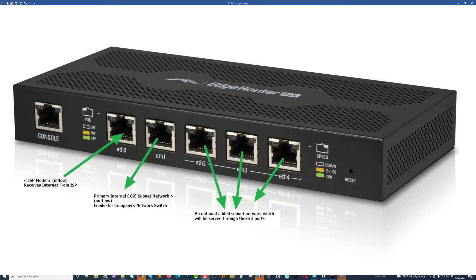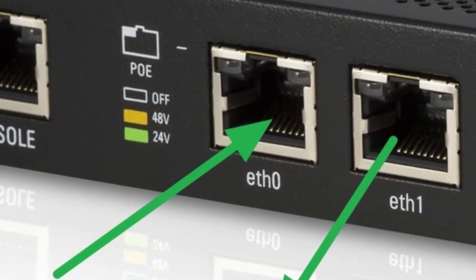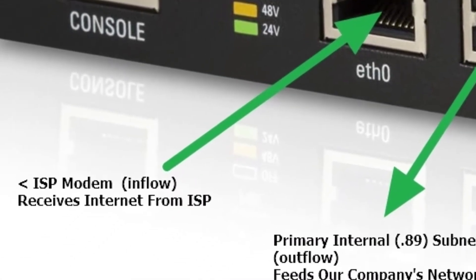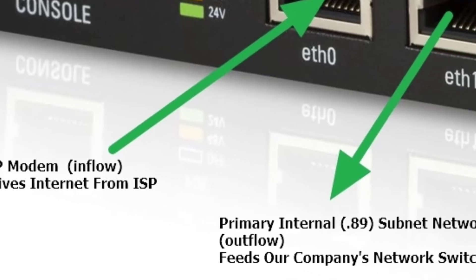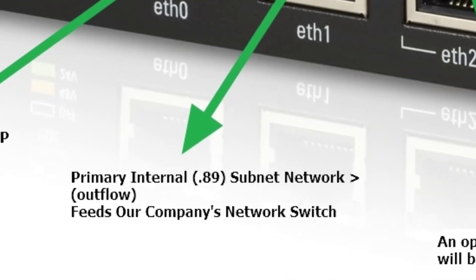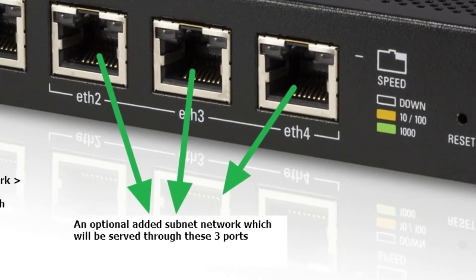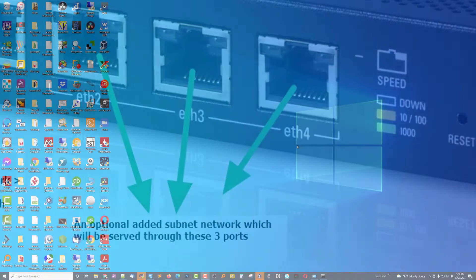This is what we're going to end up with in the final analysis. Going into Ethernet port 0 is the ISP modem — that's where the internet is going to come from, just the Ethernet cable. Coming out of port number 1 will be our primary subnet that we're going to give to the business, based on a .89 subnet, but it can be anything you want. Ports 2, 3, and 4 are a special switch that will all remain on the same subnet.